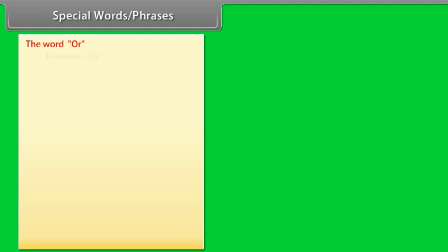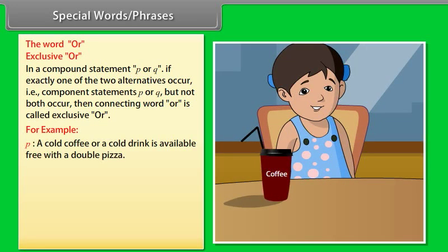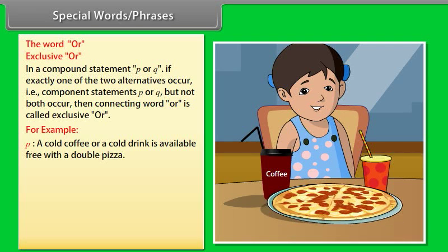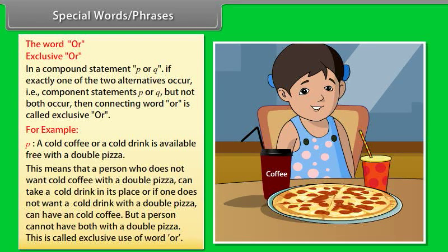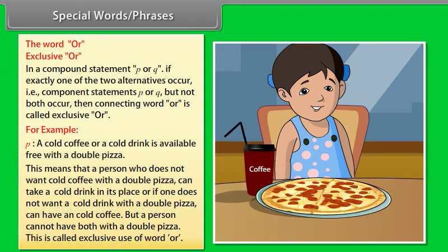The word OR — Exclusive OR: In a compound statement P or Q, if exactly one of the two alternatives occurs (that is, component statement P or Q, but not both), then the connecting word OR is called exclusive OR. For example, P: 'A cold coffee or a cold drink is available free with a double pizza.' This means a person can take one or the other but cannot have both with a double pizza. This is called exclusive use of the word OR.